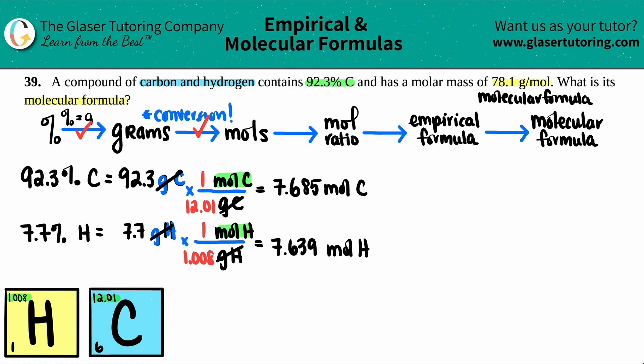Now we have to go from a mole, which is what we have, to a mole ratio. Now remember, a ratio is just taking a number and dividing it by some other number. That's what a ratio is, a division. So we have our two numbers, 7.685 and 7.639. But we have to divide these two numbers to make the ratio. But now the question is, what am I dividing it by? What's the number that goes on the bottom?